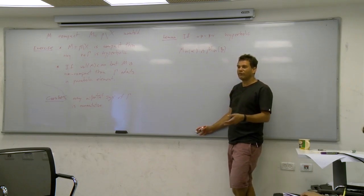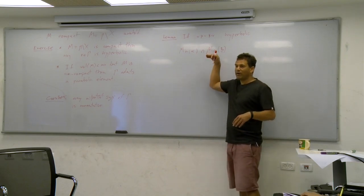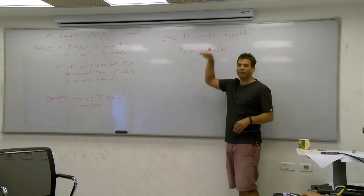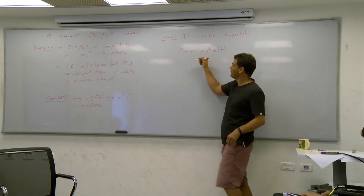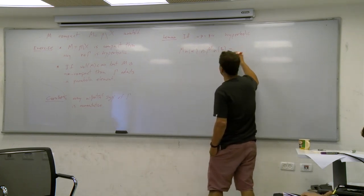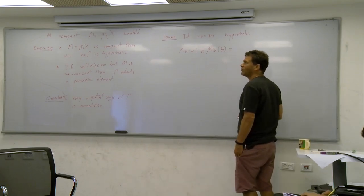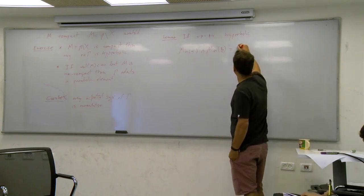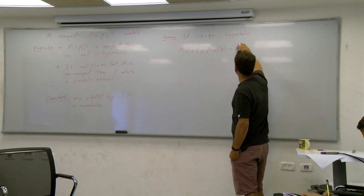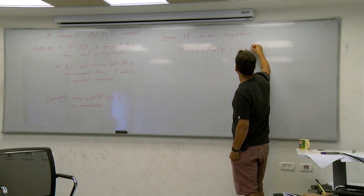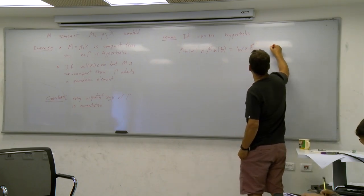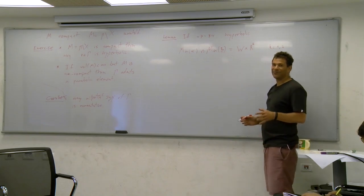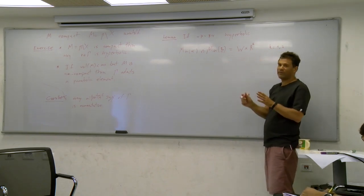This intersection is non-empty and is isomorphic to W × R^k, where k is 1 or 2, so it's W × R or W × R^2. Both alpha and beta act on this by identity on W and translation on R^k. We discussed this not just for two commuting elements but for abelian groups.